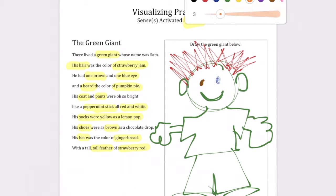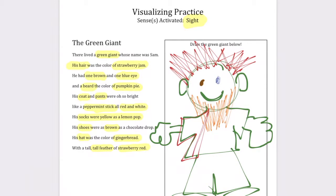And a beard the color of pumpkin pie, which is orange. So here we go, here's his beard the color of pumpkin pie. Okay, his coat and pants are red and white striped, so I have to draw a coat on him. All right, there's the coat. Okay, and red and white striped. And his pants are also red and white striped.